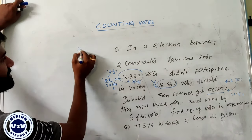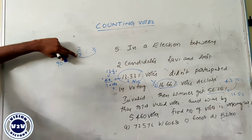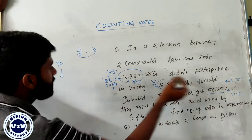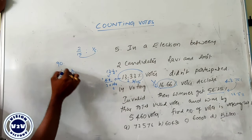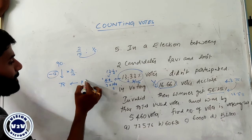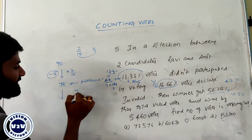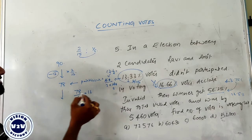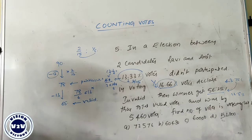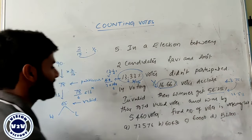First the fractions are 2 by 15 and 1 by 6. Take the number of votes as 90 — why? Because the LCM of 15 and 6 equals 90. Out of 90, 13.33 percentage did not participate, which is 2 by 15. So 15 becomes 6, 6 twos are 12, subtract 12, giving 78 votes participated. Next, 1 by 6th of votes are declared invalid: 1 by 6 of 78. 78 divided by 6 equals 13, so 13 votes declared invalid. Subtract 13, giving 65 valid votes. Winner wins by 12.5 percentage which equals 1 by 8. He wins by 1 by 8 of 65.